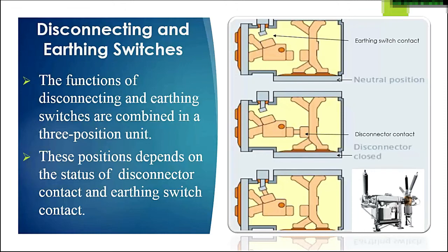In the neutral position, both contacts — the earth switch contact and the disconnector contact — are open. In the disconnector closed position, the earthing switch contact is open but the disconnector contact is closed. In the third position, the earthing switch contact is closed.